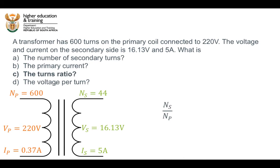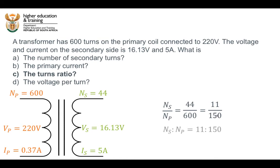Let's have a look at part three — the turns ratio. That's very simple: the turns ratio is equal to the number of turns in the secondary coil divided by the number of turns in the primary coil, which is 44 divided by 600. In its simplest form that is 11 divided by 150. When you are asked for the turns ratio, please get it down to its simplest form. We can also write it as the ratio of secondary to primary turns: 11 to 150, or write it the other way around as 150 to 11 for primary to secondary.